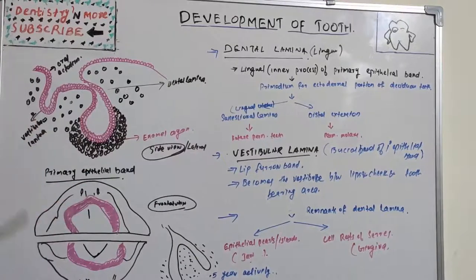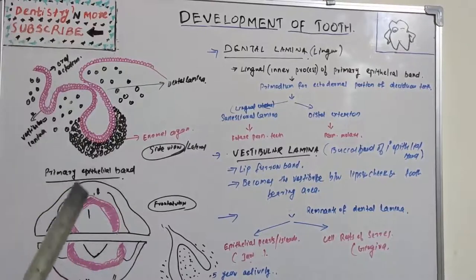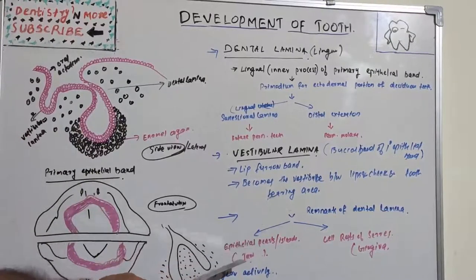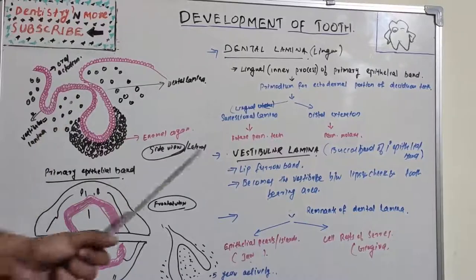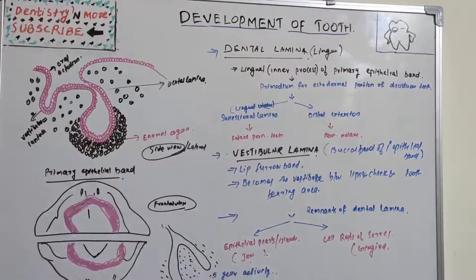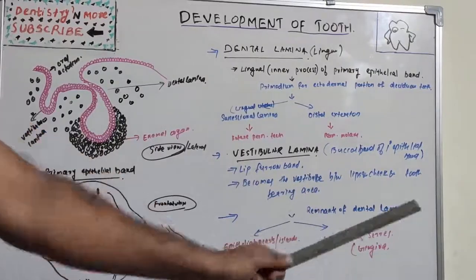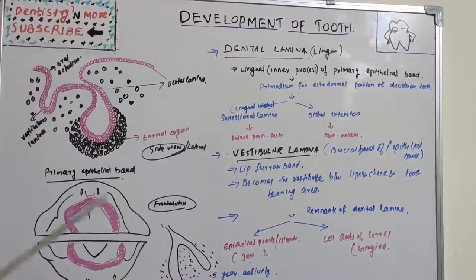The dental lamina has approximately a 5-year period of activity. After that, when the tooth forms, the tooth loses its connectivity to the dental lamina and it ruptures. The remnants may be present in the jaw or in the gingiva. The remnants of dental lamina present in the jaw are known as epithelial pearls or islands (of Serres). The remnants of dental lamina present in the gingiva are known as cell rests of Serres. These are important topics and frequently asked as short notes, short essays, and long essays.